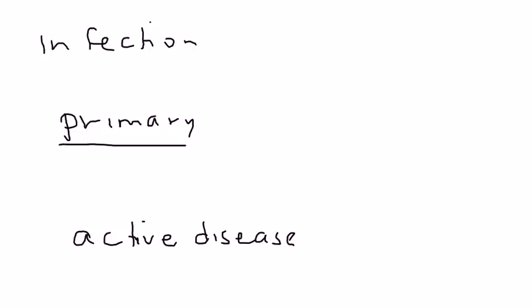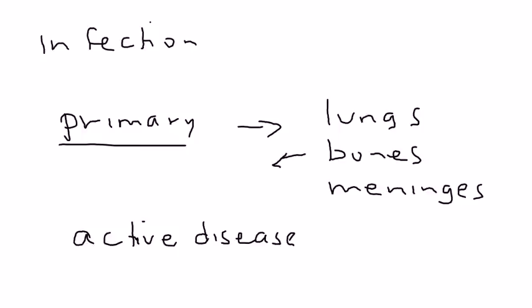But it can spread to other parts of the body and not just the lungs. It can spread to the bones, it can also spread to the meninges. Just as an aside, TB of the spine is known as Pott's disease, and that's a commonly tested exam item.